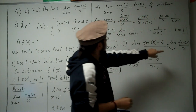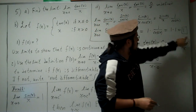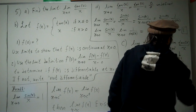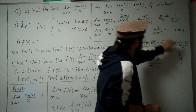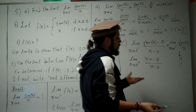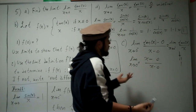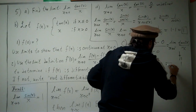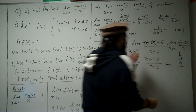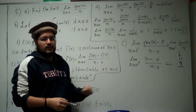We already know from part a that the limit as x → 0 of tangent x over x is 1, so the left-hand derivative is 1. For the right side, (x − 0)/(x − 0) = 1, so the right-hand derivative is also 1. Since both one-sided limits equal 1, f(x) is differentiable at x = 0.